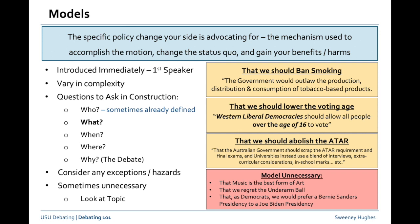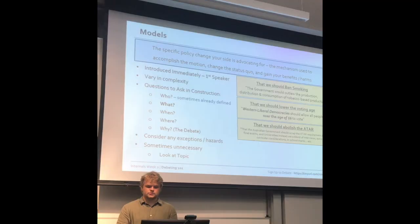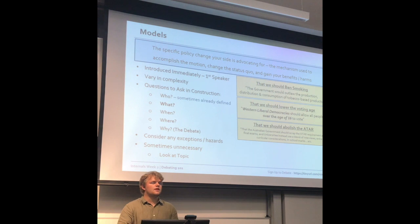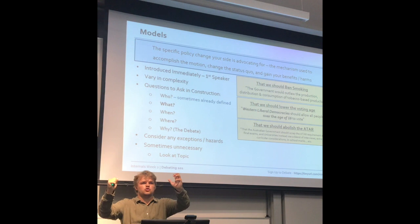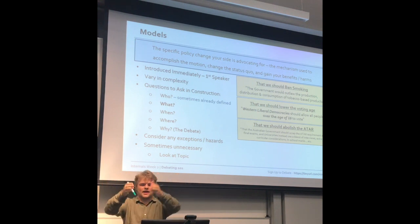An example of a topic where the model might require more complexity is 'we should abolish the ATAR' — that probably requires you to explain what you're replacing the ATAR with specifically. In this circumstance, you'd say the government would scrap the ATAR requirement and final exams, and universities would instead use a blend of interviews and school marks. If you're scrapping something and creating a vacuum, you should probably define in your model what goes in place for that.